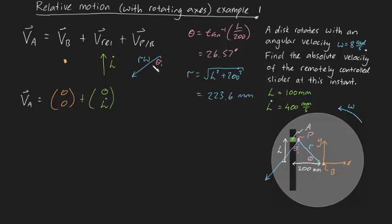And now we need to add that to this value right here. Now, this is a little bit of a tricky one, because this vector has components in both the I and J direction. The I direction will be negative, so it'll be minus R omega, sine theta, sine theta, and the J component will be minus R omega, cosine theta.